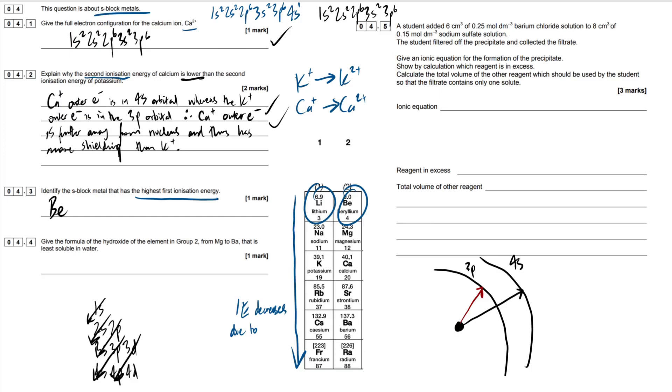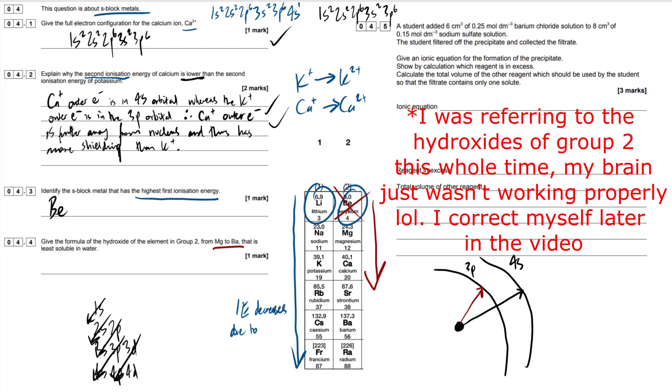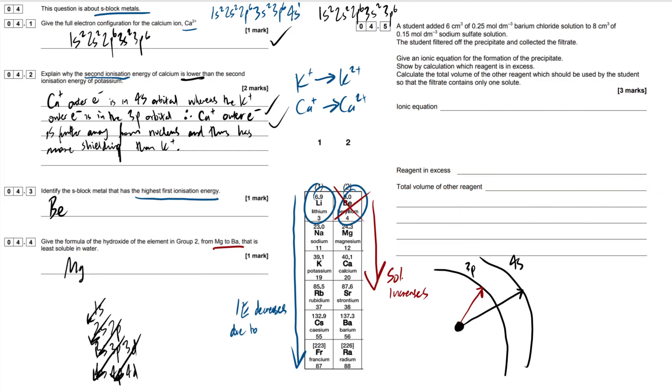4.4 then. Give the formula of the hydroxide of the element in group two from magnesium to barium that is least soluble. So we've sort of forgotten about beryllium here. We're only concerned with magnesium to barium. I suppose if you didn't read the question carefully, you'd be like, I know that the solubility increases, therefore it's beryllium. But they don't care about beryllium anymore. So basically as we go down group two, the solubility increases. So our answer here is just going to be magnesium hydroxide.